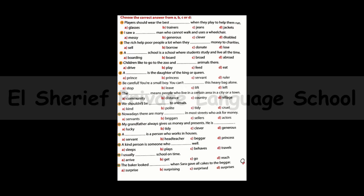Number six: A ___ is the daughter of the king or a queen. The answer is: a princess is the daughter of the king or queen.